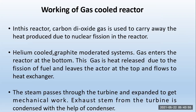Working of the gas-cooled reactor: in this reactor, carbon dioxide gas is used to carry away the heat produced due to nuclear fission in the reactor, using a helium-cooled graphite moderator system. Gas enters the reactor at the bottom, is heated due to the fission of fuel, and leaves at the top and flows to the heat exchanger. The steam passes through the turbine and expands to get mechanical work. Exhaust steam from the turbine is condensed with the help of the condenser.